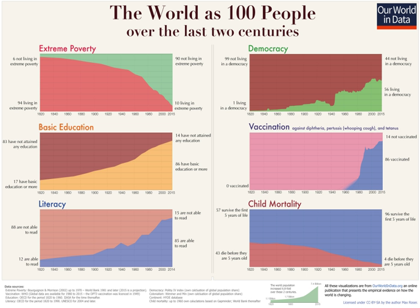The web publication on global development uses interactive data visualizations to present the research findings on development that explain the causes and consequences of the observed changes. The aim is to show how the world is changing and why.